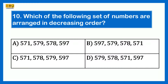Which set of numbers is arranged in decreasing order? Option A: 571, 579, 578, 597. Option B: 597, 579, 578, 571. Option D: 579, 578, 571, 597. Decreasing order is from large to small, so starting from the largest number. The correct answer is Option B.